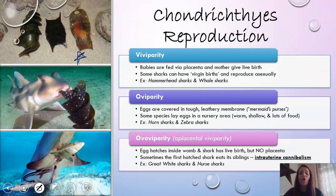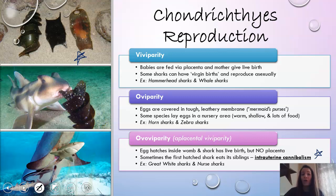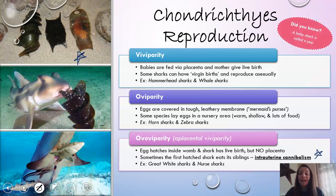And then lastly, we have ovoviviparity. This is kind of a combination of the two — you have an egg, but the egg is actually hatched inside of the mother, but there's no placenta. So the shark still gives live birth, but the baby is developing inside an egg inside the mother. A scary but fun fact: some sharks do something called intrauterine cannibalism — the first one to hatch inside the mom is going to eat all the other ones, so only the strong survive. Examples here are great white sharks and nurse sharks. And did you know that a baby shark is actually called a pup?